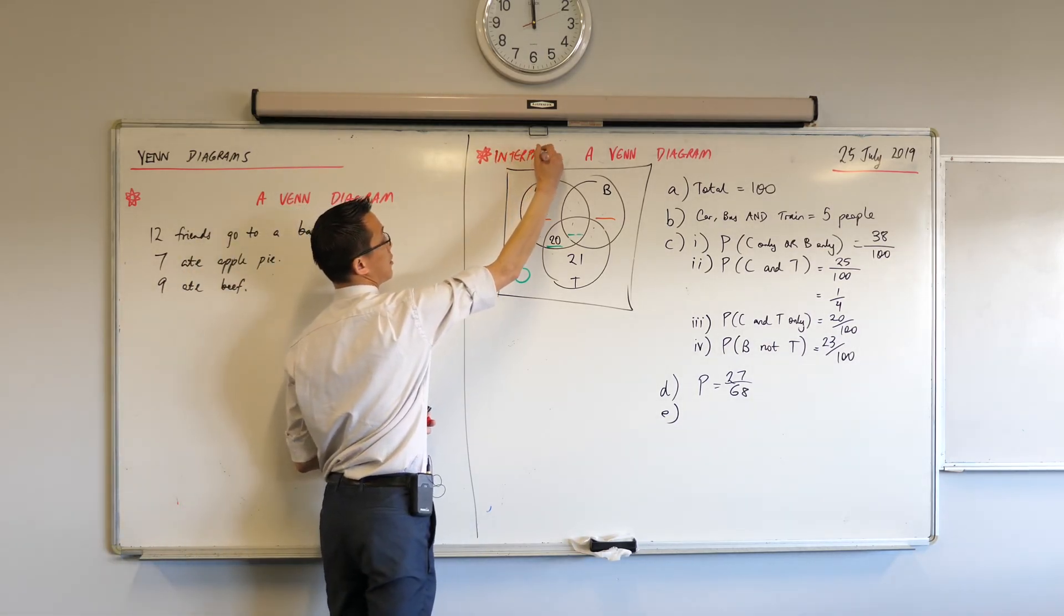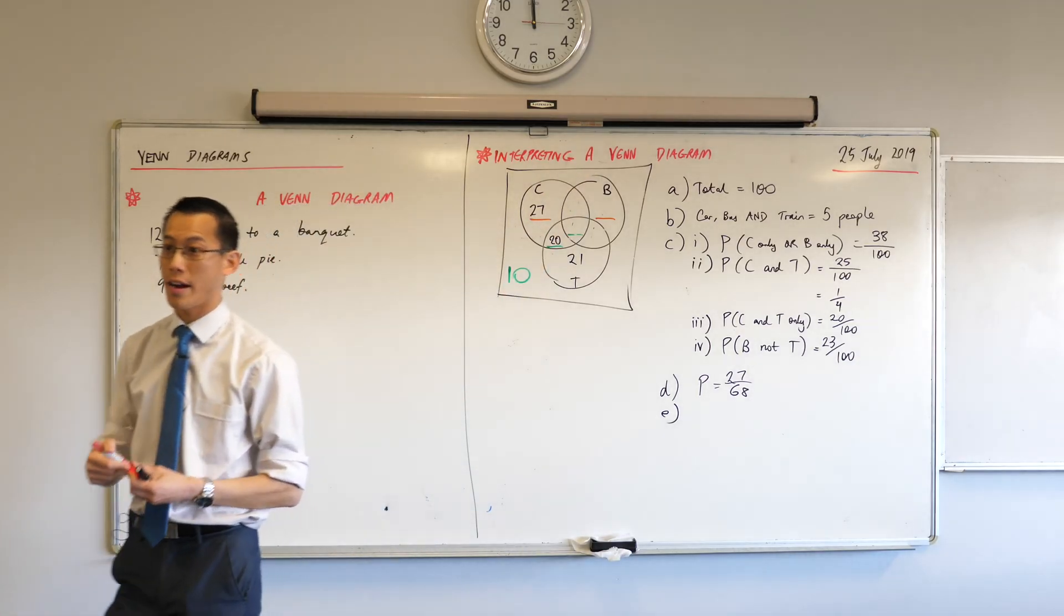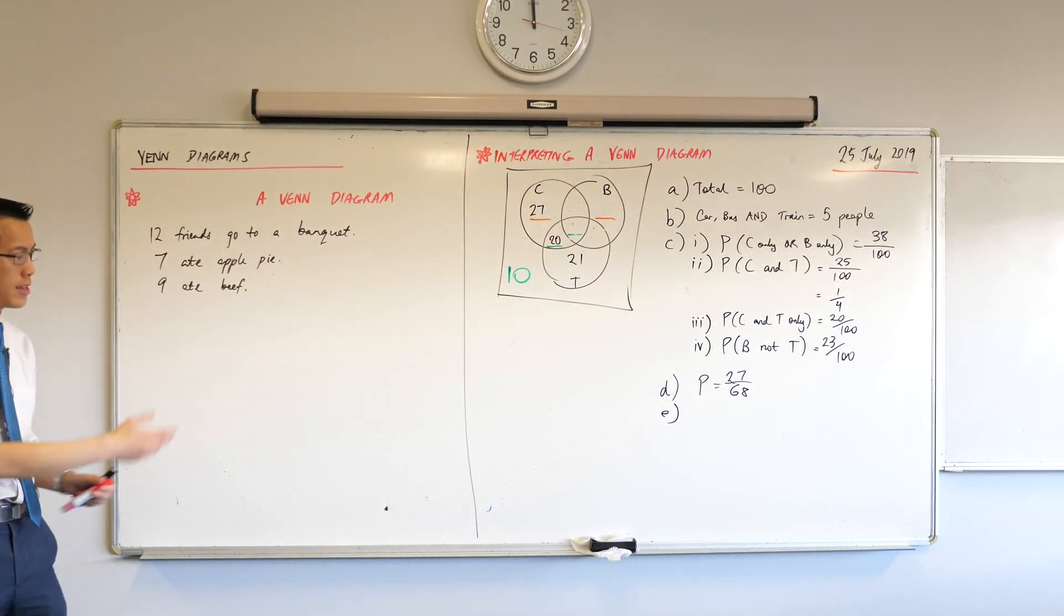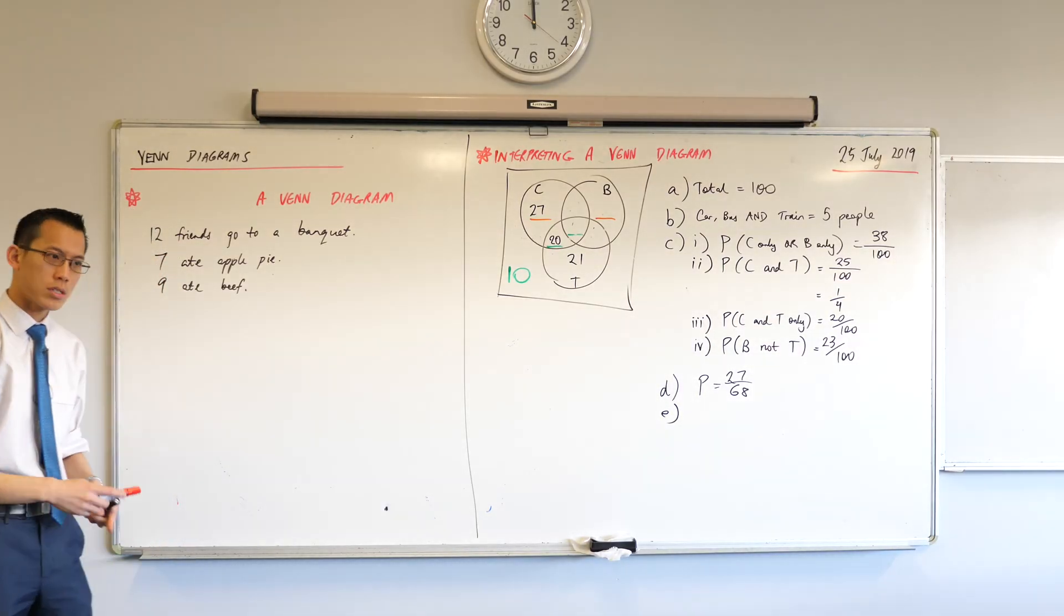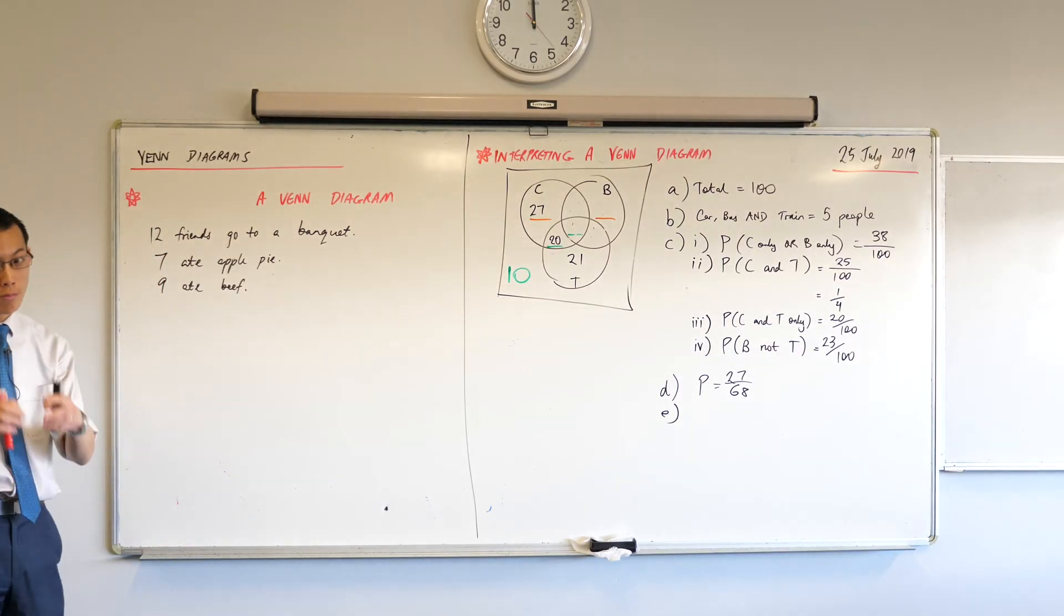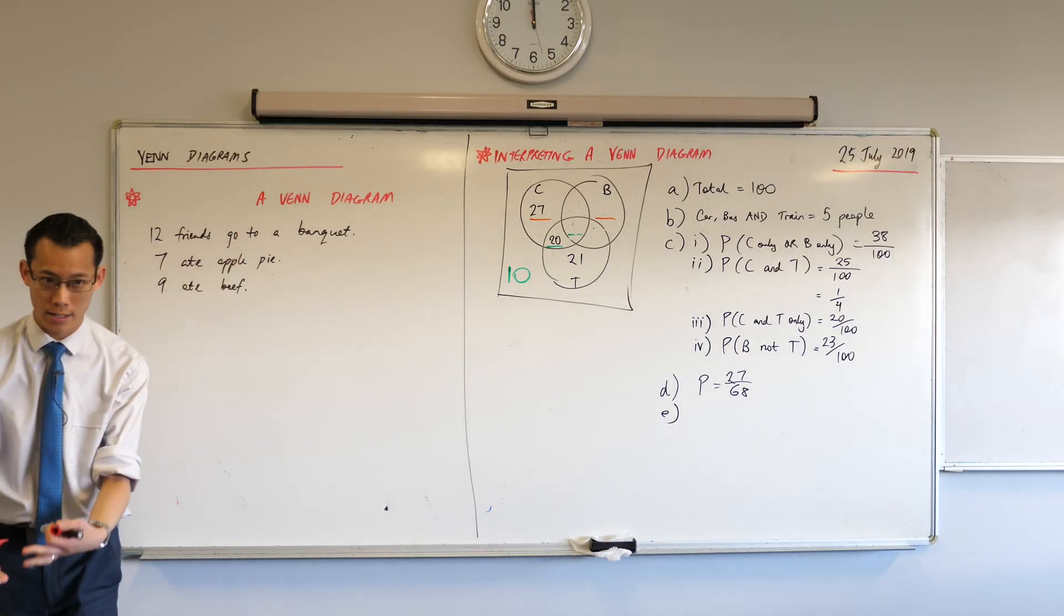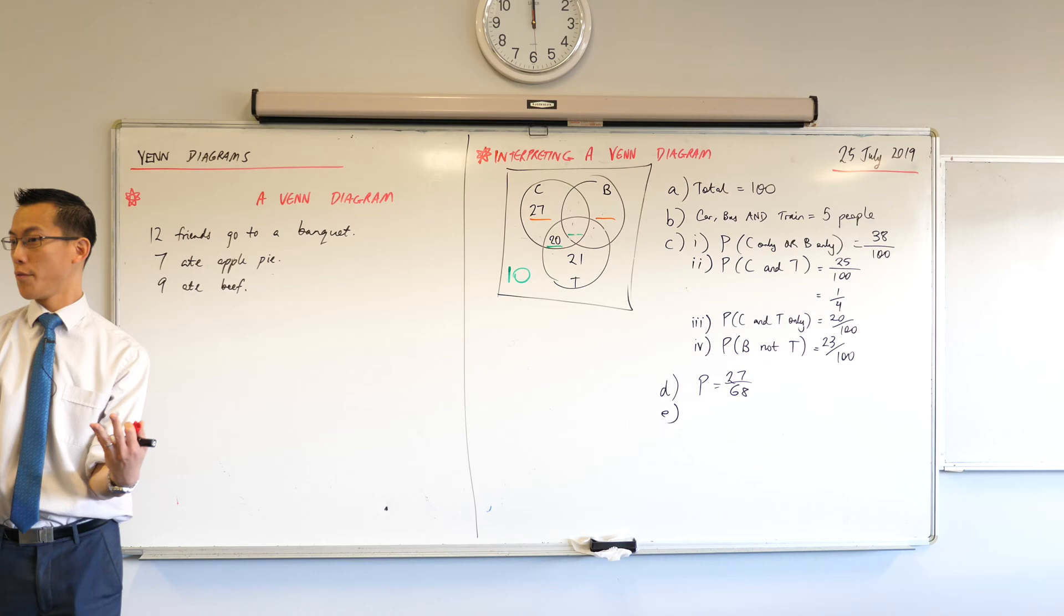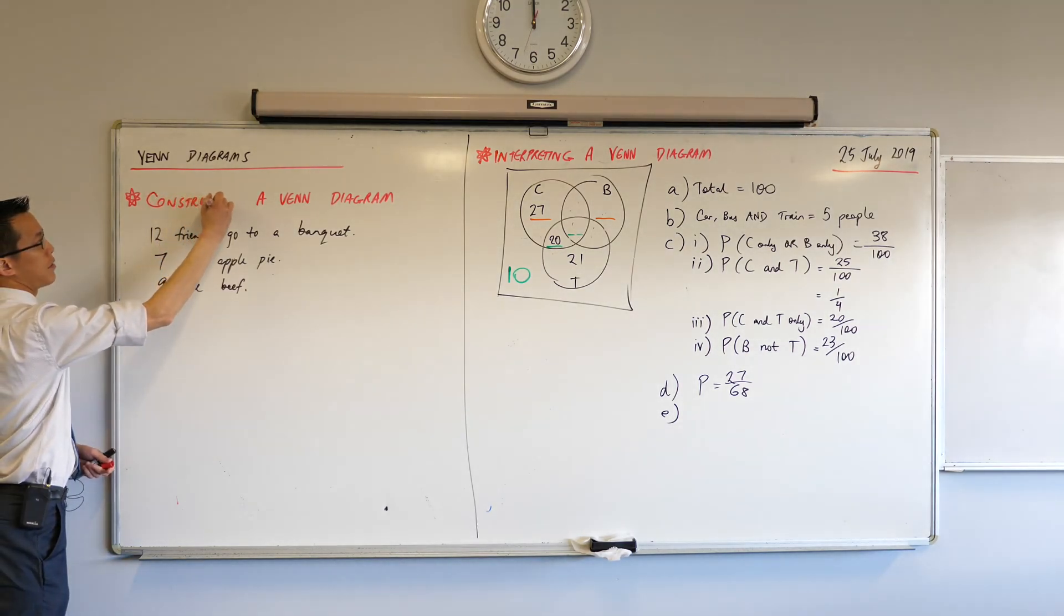So what you've been doing is interpreting a Venn diagram that's been handed to you. And as you can see, that takes some careful thought, but it's doable, right? What's a lot more challenging, and therefore more important, is not interpreting a Venn diagram that has been handed to you, but getting a bunch of information and then building the Venn diagram yourself.